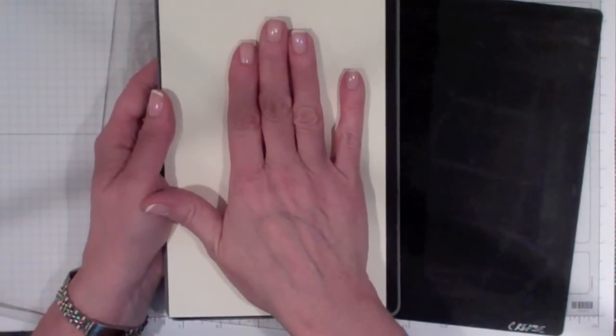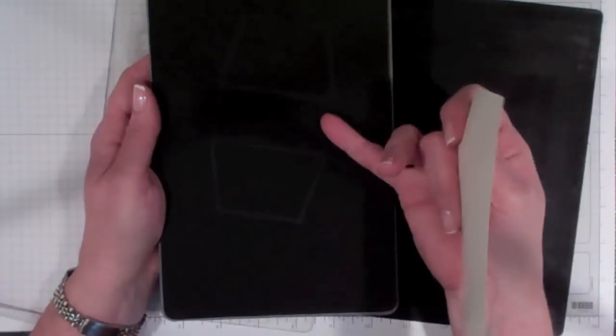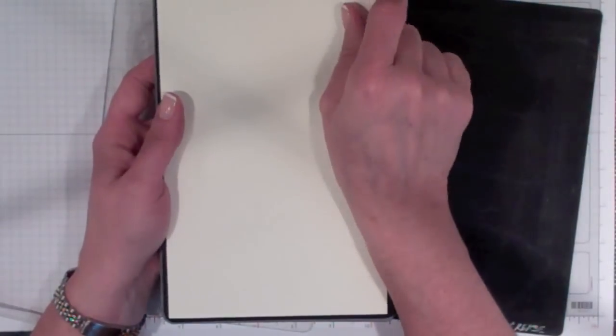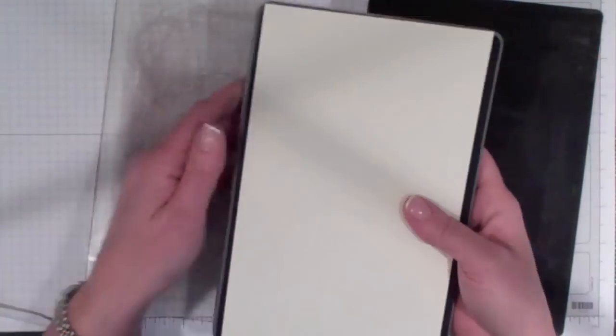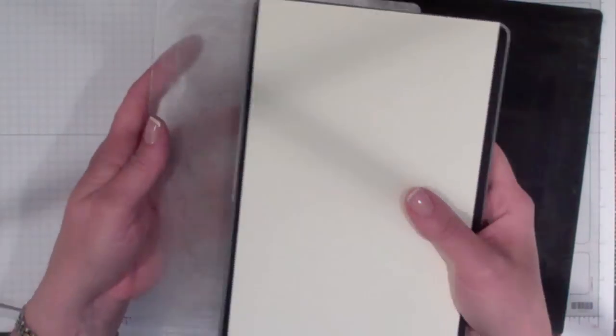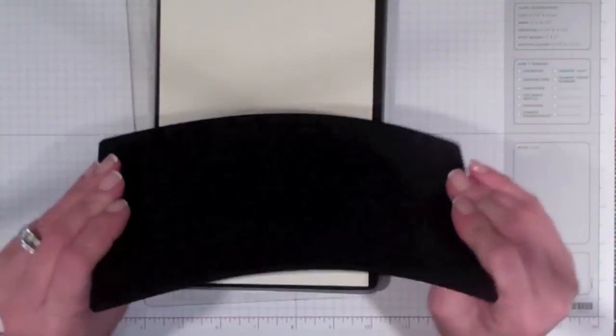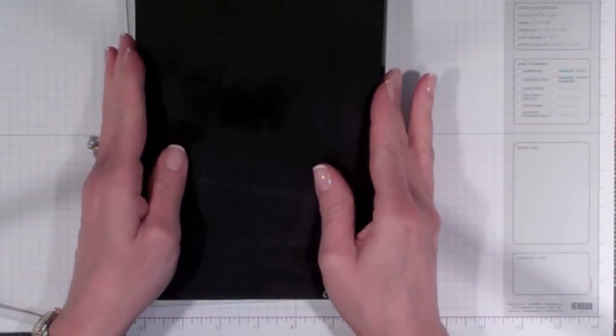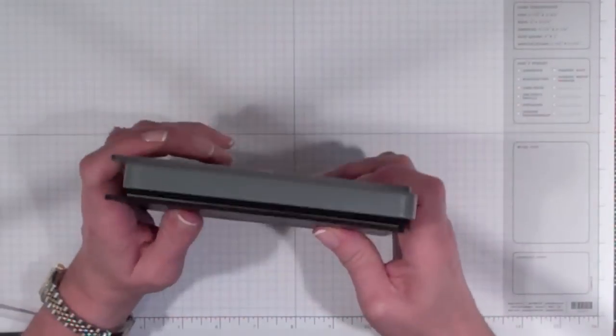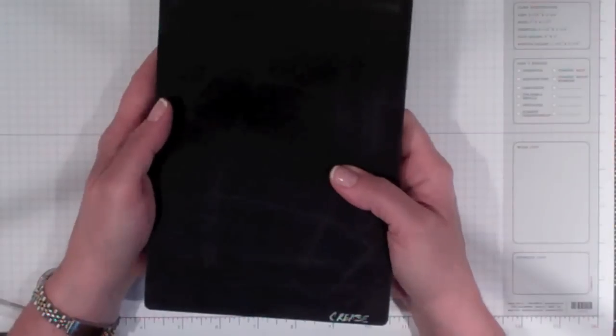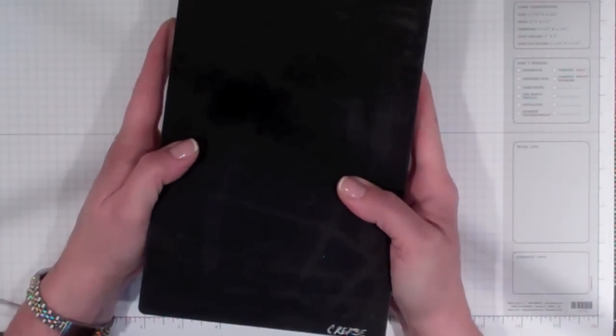We're going to put the cardstock right on top of the die with the blades up. Then you're going to put the die on top of a cutting plate and cover it with your crease pad, which is pliable. Put that right on top and that's going to give you nice creases without actually cutting your cardstock. Then run this whole thing through the Big Shot.